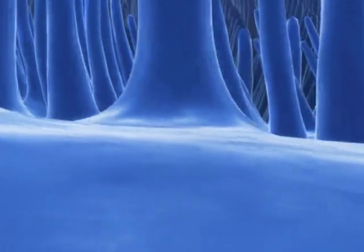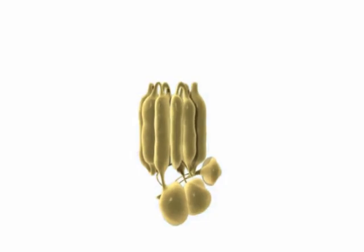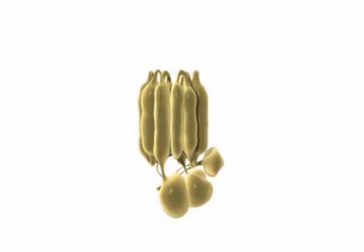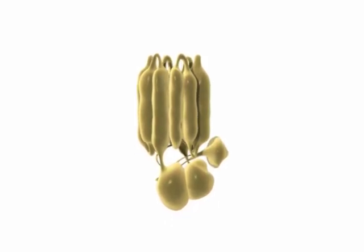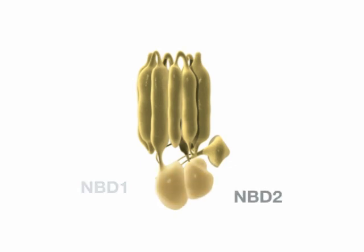The CFTR protein facilitates the transport of chloride into and out of cells. CFTR is a complex glycoprotein composed of 1480 amino acids. CFTR has a regulatory domain that contains phosphorylation sites, and two nucleotide binding domains, NBD1 and NBD2.